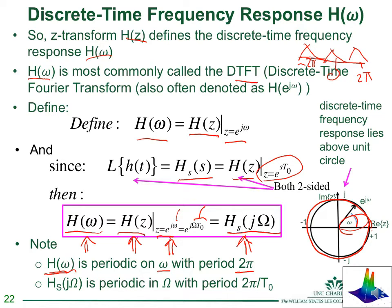The jω axis is the boundary in the Laplace plane between stable and unstable poles — it corresponds to the Fourier transform. Similarly, the unit circle is the boundary in the z-plane for discrete-time systems, and it corresponds to the discrete-time Fourier transform.